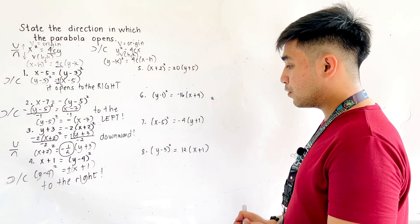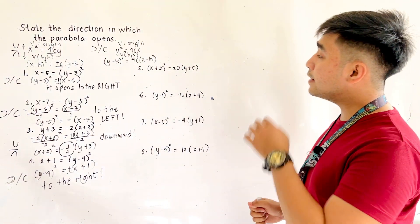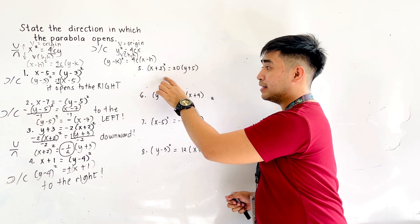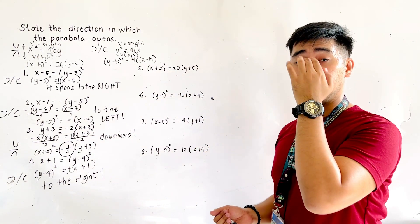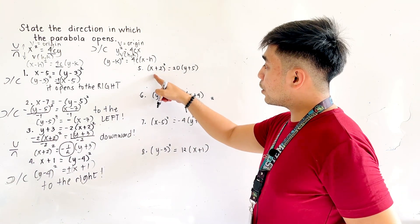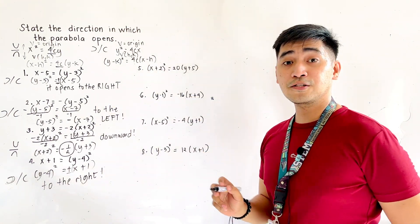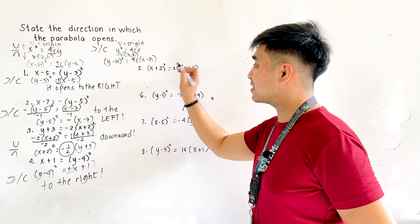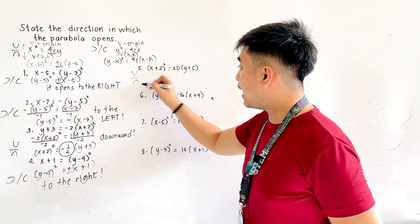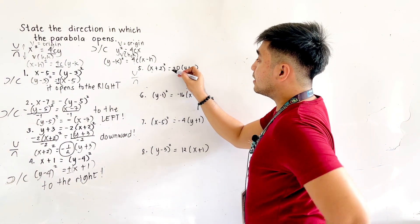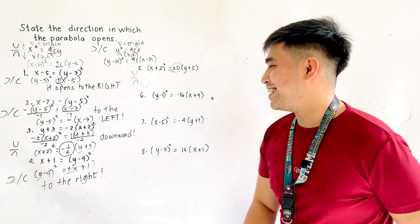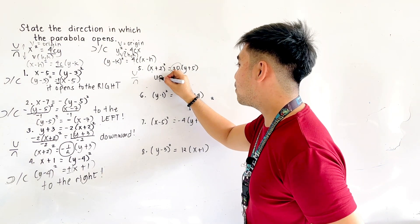For number 5, it is already written in standard form. We are given x plus 2 quantity squared, so that is x squared. If we have x squared, it could either open up or down. But since the right side is positive, it is opening upward.